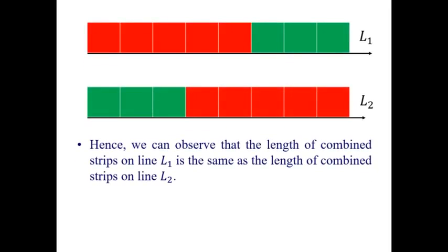Hence, we can observe that the length of the combined strips on the line L1 is the same as the length of the combined strips on line L2. So, 5 plus 3 is equal to 3 plus 5. So, 5 red squares plus 3 green squares, that is equal to 3 green squares plus 5 red squares. The number of squares in each strip is 8.